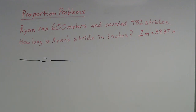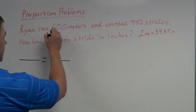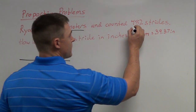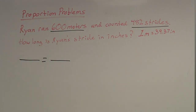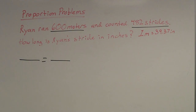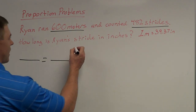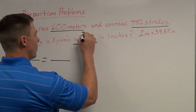Some numbers are quite obvious and some are not. The first thing I see is 600 meters — that's an obvious number. 482 strides is another obvious number. But the third one, 'one meter is equal to 39.37 inches,' is a conversion and not part of the initial problem. As I read the last sentence, 'How long is Ryan's stride?' — that means one stride. So the third number is 1.